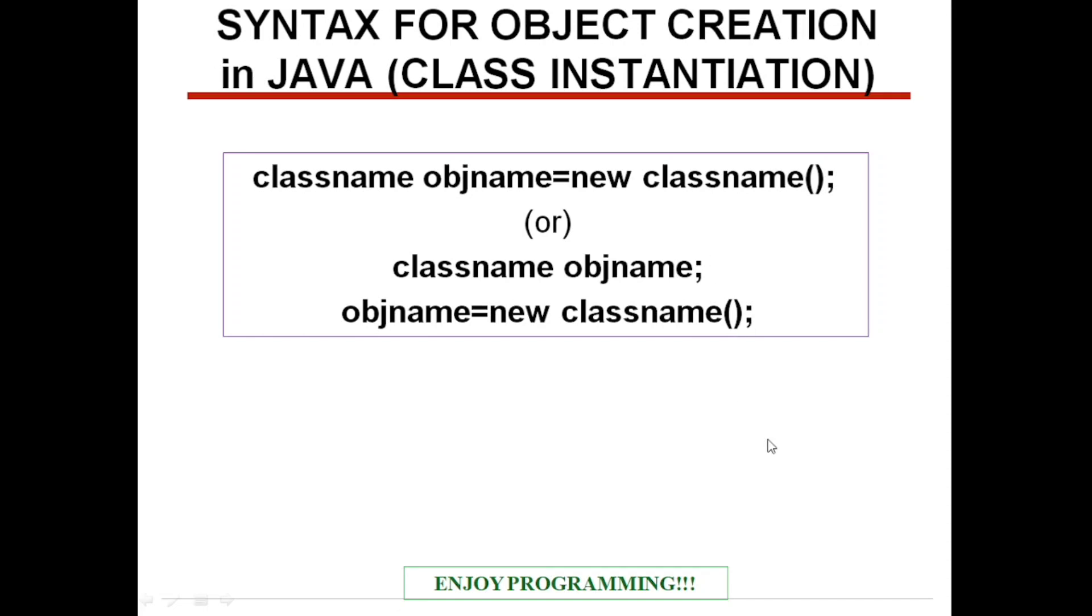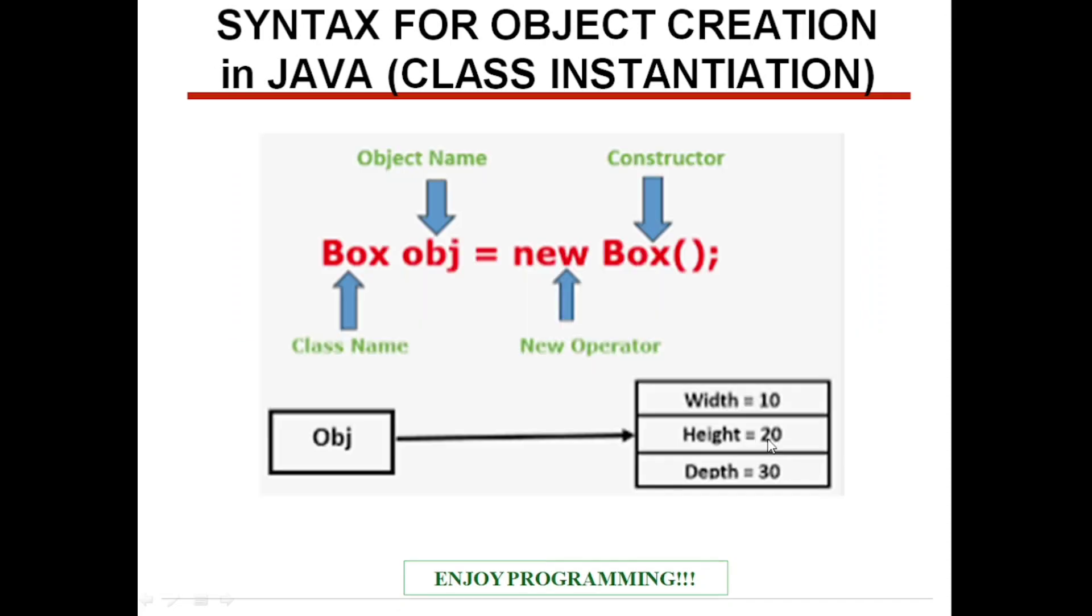In either ways, we can write the syntax. Here is an example for object creation in Java. Box, which is the class name, obj, which is the object name, is equal to new dynamic memory allocation operator. Box, parenthesis semicolon, constructor. Later on, we can assign the values using the constructor. In this manner, we will be writing the syntax for object.